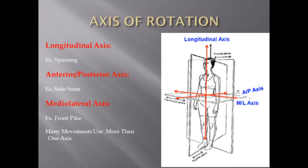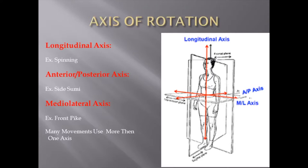Let's talk about the axis of rotation. We did our planes, but now let's talk about how we rotate. The longitudinal axis is your spinning axis — it aligns with the transverse plane. As you spin, you're moving in the transverse plane, which means you're spinning about the longitudinal axis. The anterior-posterior axis goes right through your belly button and is your cartwheel axis — used for side somersaults, cartwheels, and roundoffs. The medial-lateral axis goes through the hips like a high bar, and any hip circle around this bar is on this axis.